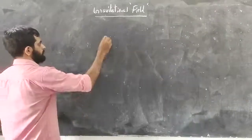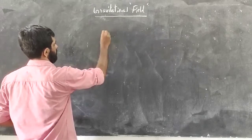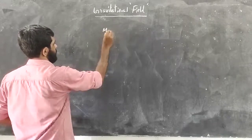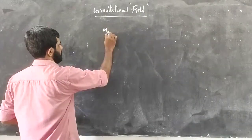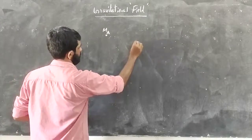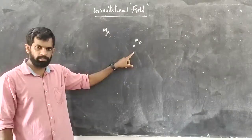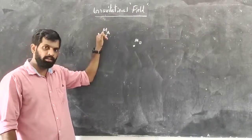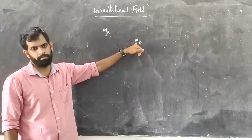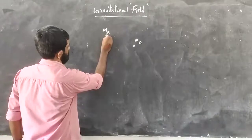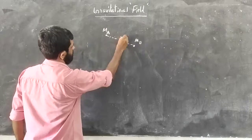Suppose I am placing two point masses. This is the first body of mass MA, and somewhere here is mass MB. So we have two point masses — one with mass MA and the other with mass MB — and they are separated by a distance R.